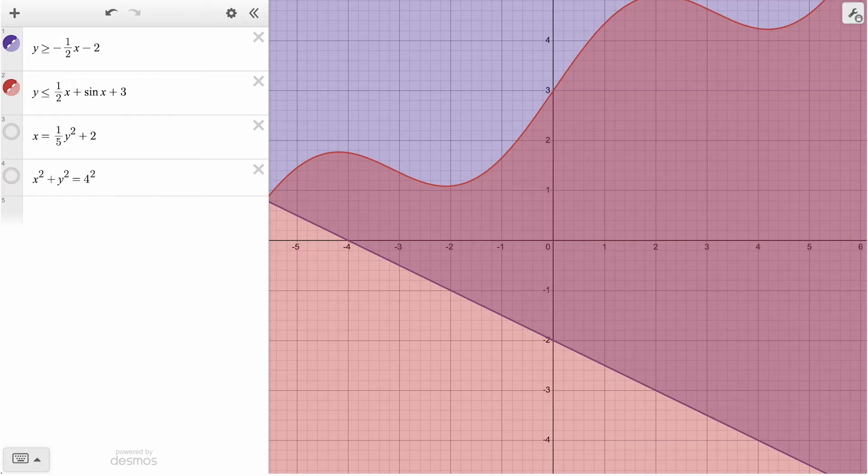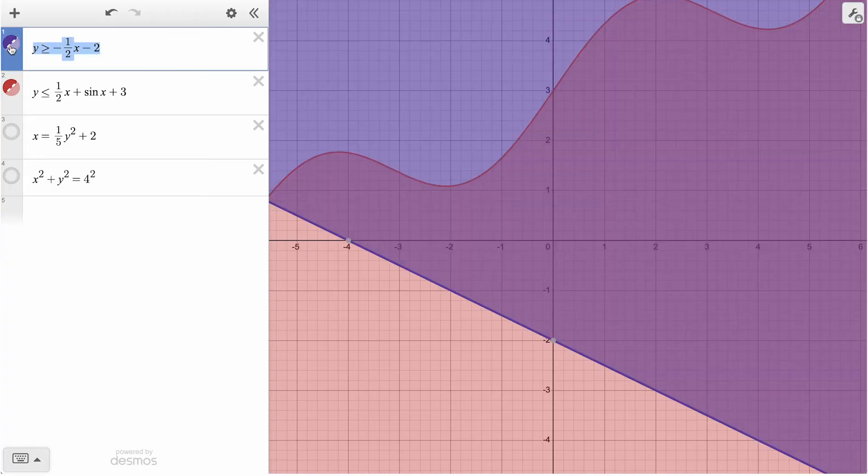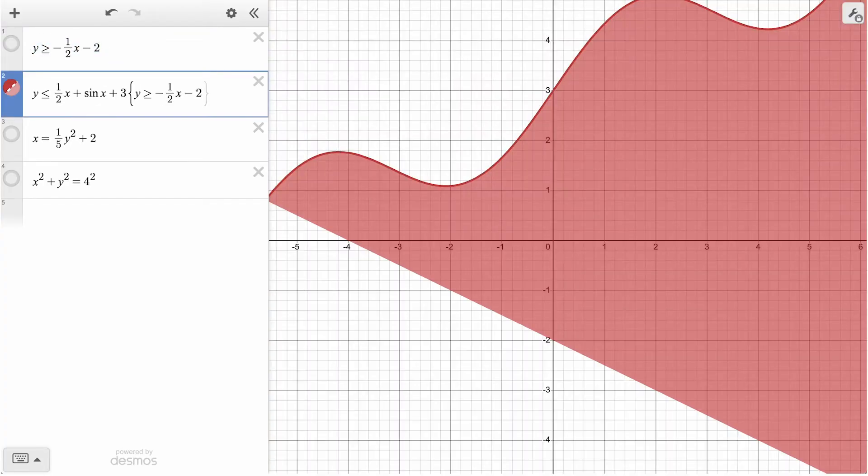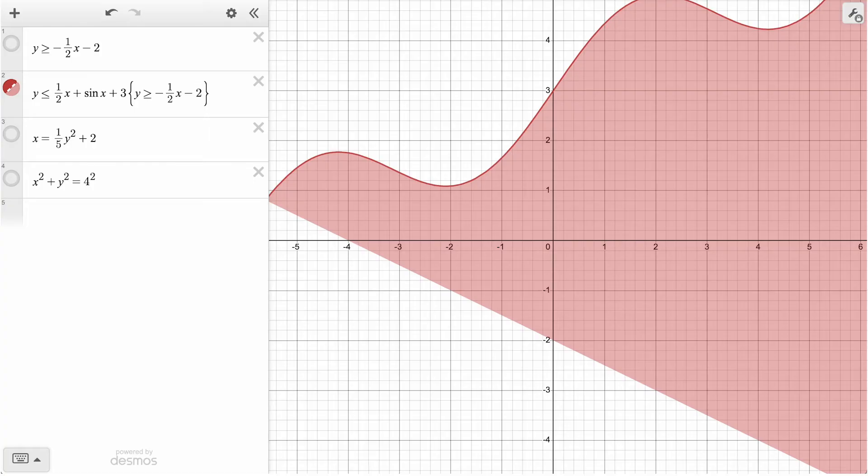Just like we used curly brackets after our function to restrict where it appeared, we can use that same notation to visualize this region of intersection. By putting our first inequality expression in brackets after our second expression, we are visualizing the shaded region that is both above our line and below our sine curve.